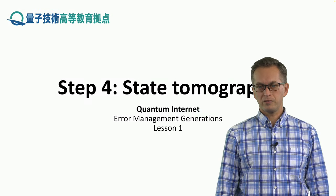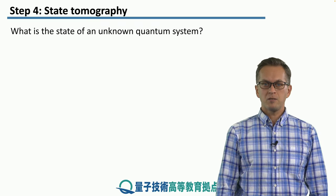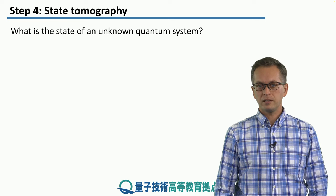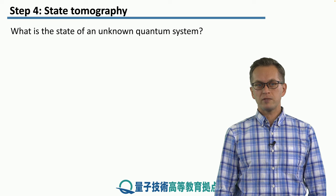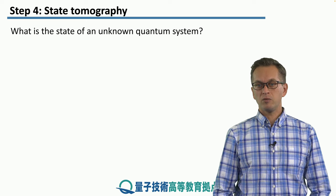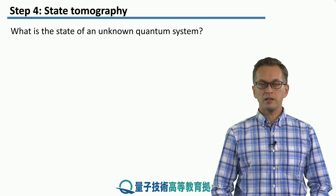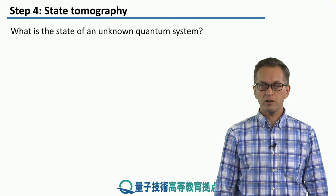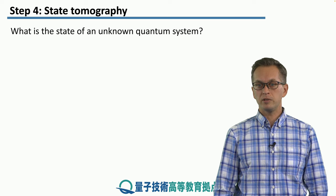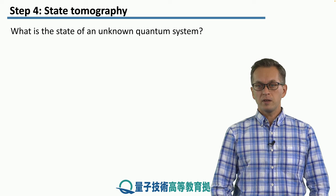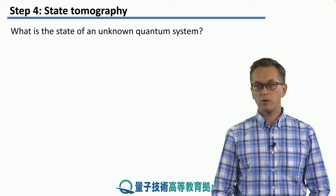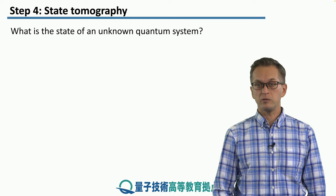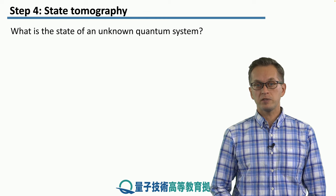Step four, state tomography. How do we find out the state of a random quantum system? In the previous step, we have seen that even if we start with a non-ideal system, it can undergo some coherent or incoherent non-deterministic errors. So in the end, we get something that we're not quite sure what it is, and we have to have a way of finding out what the state of the system is. That's the job of state tomography.